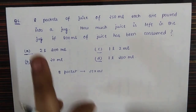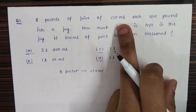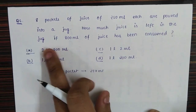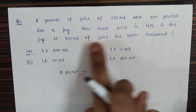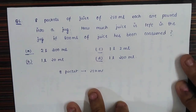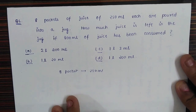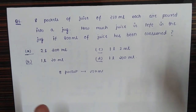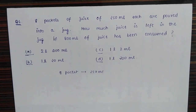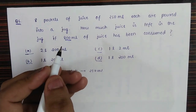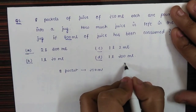The question was: eight packets of juice of 250 ml each are poured into a jug — how much juice is left in the jug if 800 ml of juice has been consumed? The question is simple: we have to calculate the total amount of juice poured into the jug and then subtract 800 ml from that total quantity.